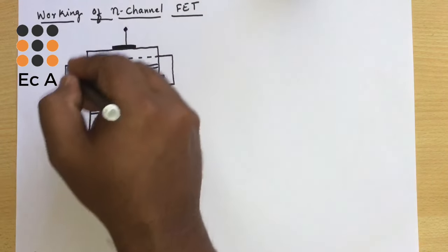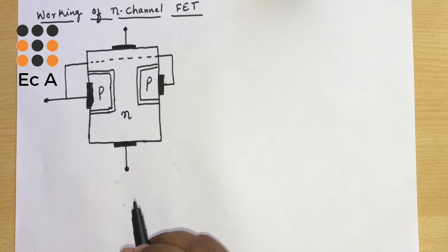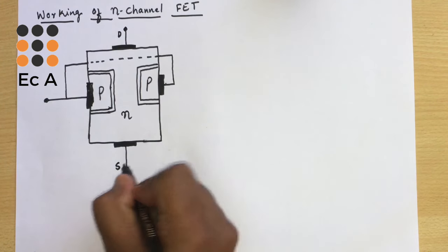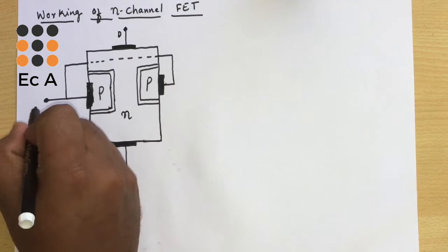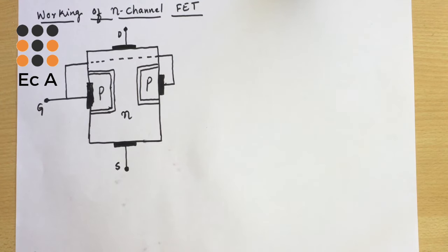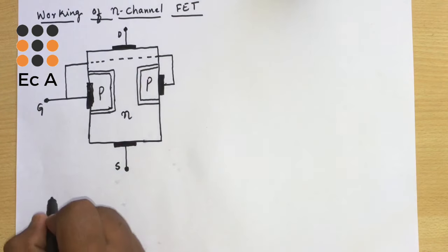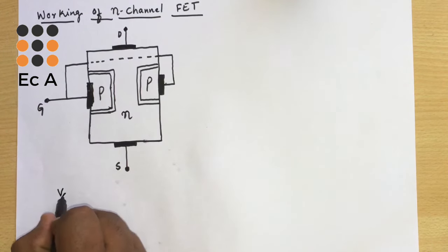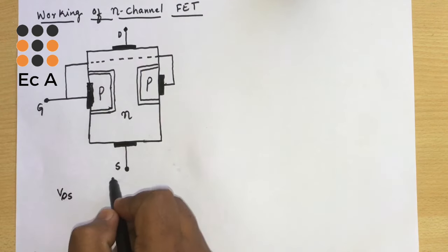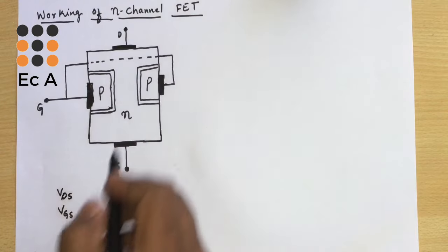Let us consider the structure of N-channel FET. We apply voltage between the drain terminal and source terminal, and also apply voltage between the gate terminal and source terminal. The voltage between drain and source we will call VDS, and the voltage between gate and source we will call VGS.